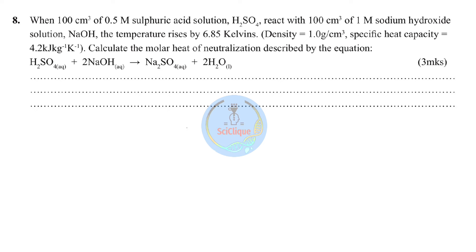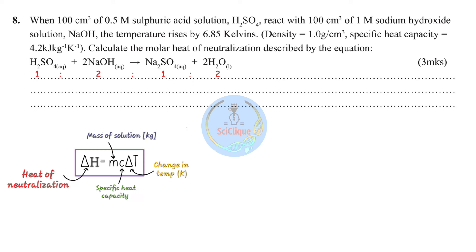The equation shows sulfuric acid reacting with sodium hydroxide to form sodium sulfate plus water — a neutralization reaction with mole ratio 1:2:1:2. Step one: find the enthalpy using the formula Q = mcΔT. ΔT = 6.85 K (already provided). The mass is found by multiplying volume by density: 100 + 100 = 200 cm³; 200 × 1 = 200 g.